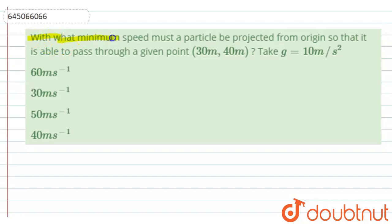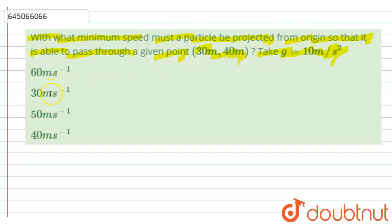The given question is: with what minimum speed must a particle be projected from the origin so that it is able to pass through a given point at (30 m, 40 m)? We take g = 10 m/s². The given options are 60 m/s, 30 m/s, 50 m/s, and 40 m/s.